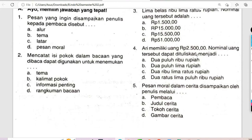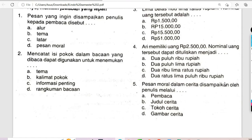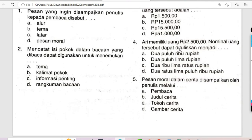Berikut untuk soal nomor 4: Ari memiliki uang Rp2.500. Nominal uang tersebut dapat dituliskan menjadi: A. Rp20.000, B. Rp25.000, C. Rp2.500, D. Rp250.000. Anak-anak semuanya, sangat jelas sekali bahwa Rp2.500 itu ada pada jawaban yang C.